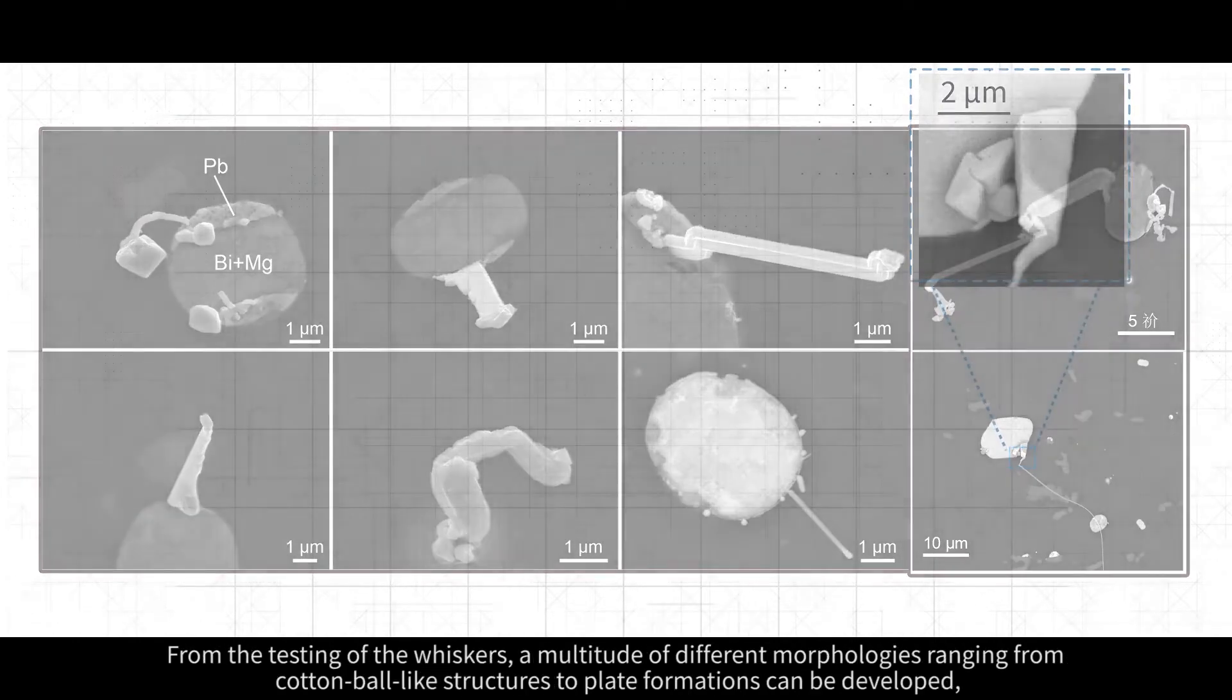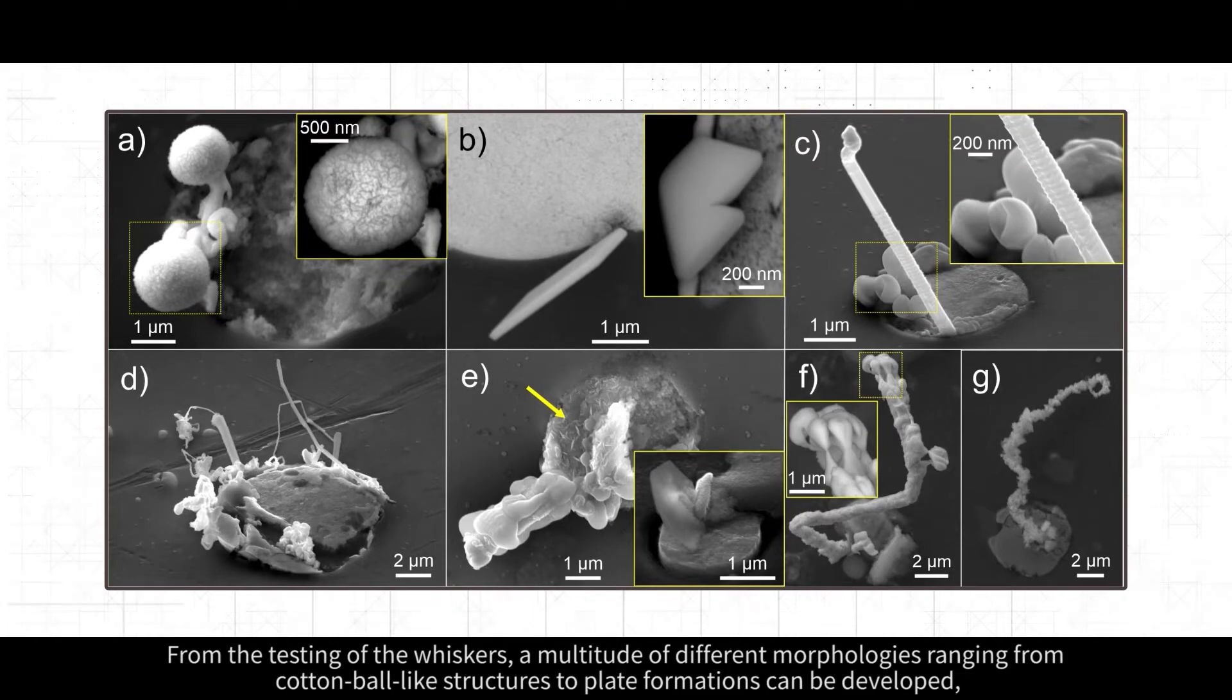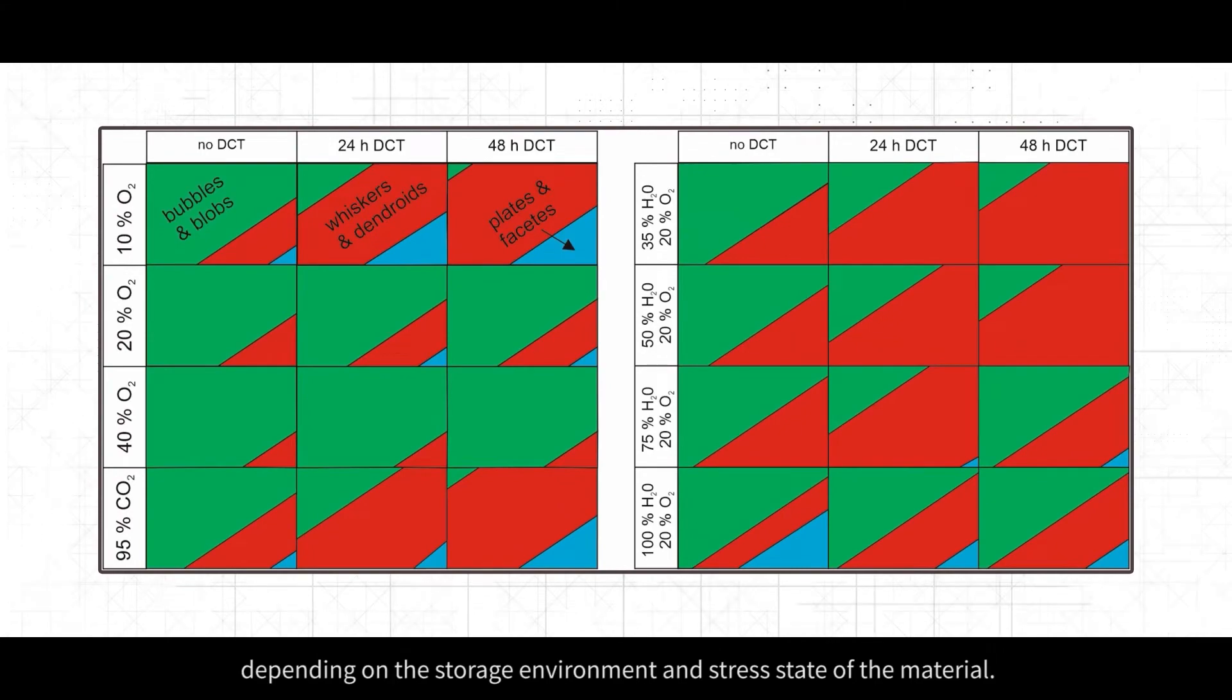From the testing of the whiskers, a multitude of different morphologies ranging from cotton ball-like structures to plate formations can be developed, depending on the storage environment and stress state of the material.